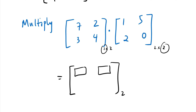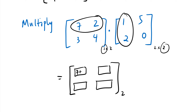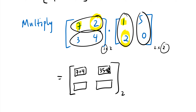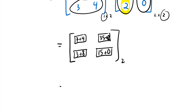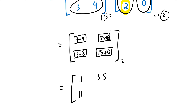Row by column: 7 times 1 is 7, and 2 times 2 is 4, giving 11. For the second column: 7 times 5 is 35, and 2 times 0 is 0, giving 35. For the second row with the first column: 3 times 1 is 3, and 4 times 2 is 8, giving 11. Second row with second column: 3 times 5 is 15, and 4 times 0 is 0, giving 15. The result is [11, 35; 11, 15].